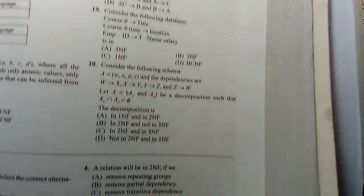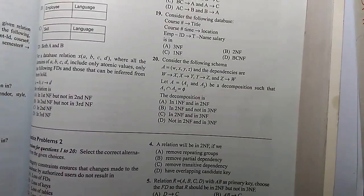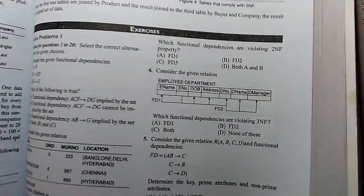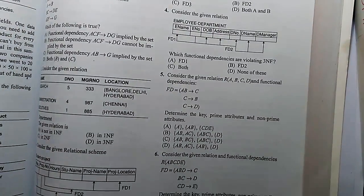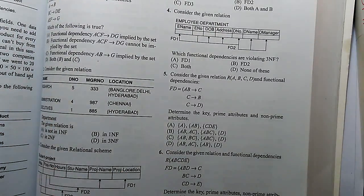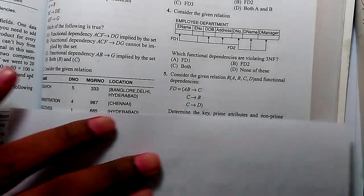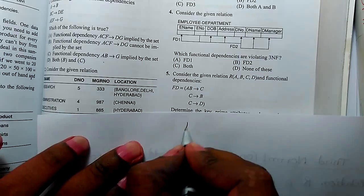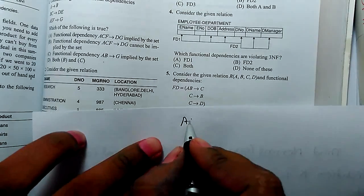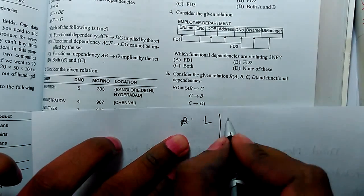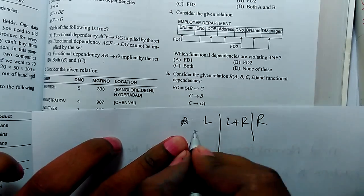Now let's take some examples from the GATE, that is a prestigious exam in India. This is question number 5. We have to find a key, prime attributes and non-prime attributes. AB functionally determines C. It means for finding key there is a rule L plus R and R.